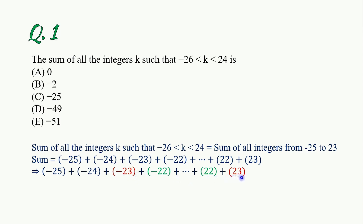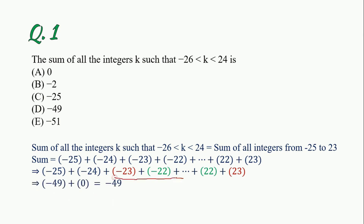We need to add minus 23 plus positive 23, which cancel out. We need to add minus 22 plus positive 22, which also cancel out. So we are left with minus 24. We need to add minus 24 plus minus 25, so the sum is minus 49. The ultimate result is minus 49, so the answer is D.